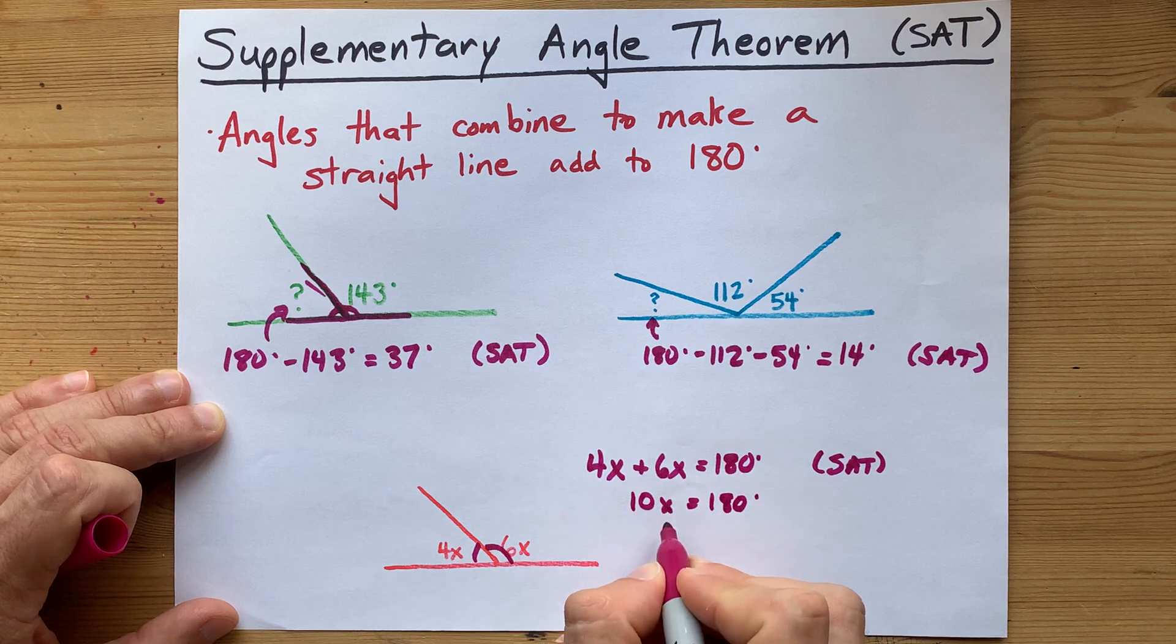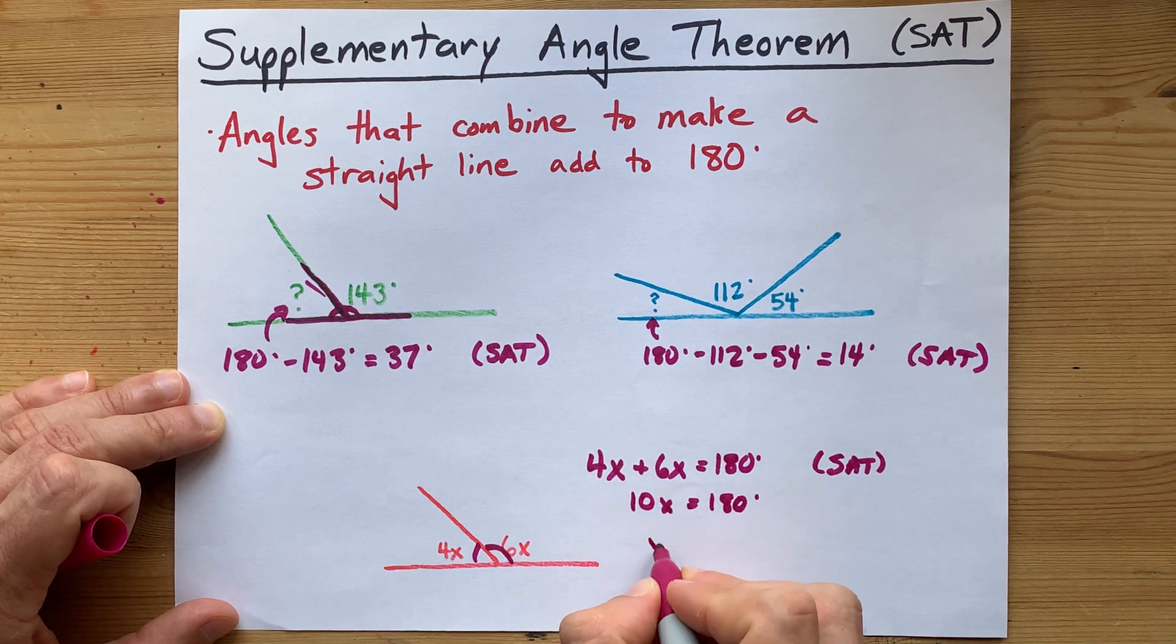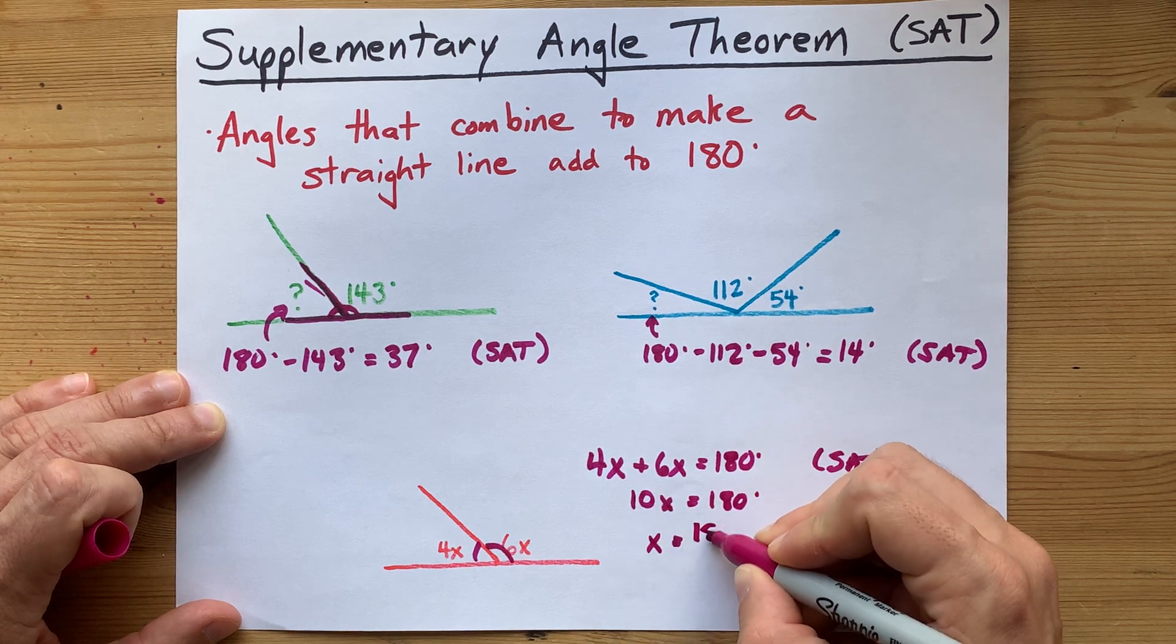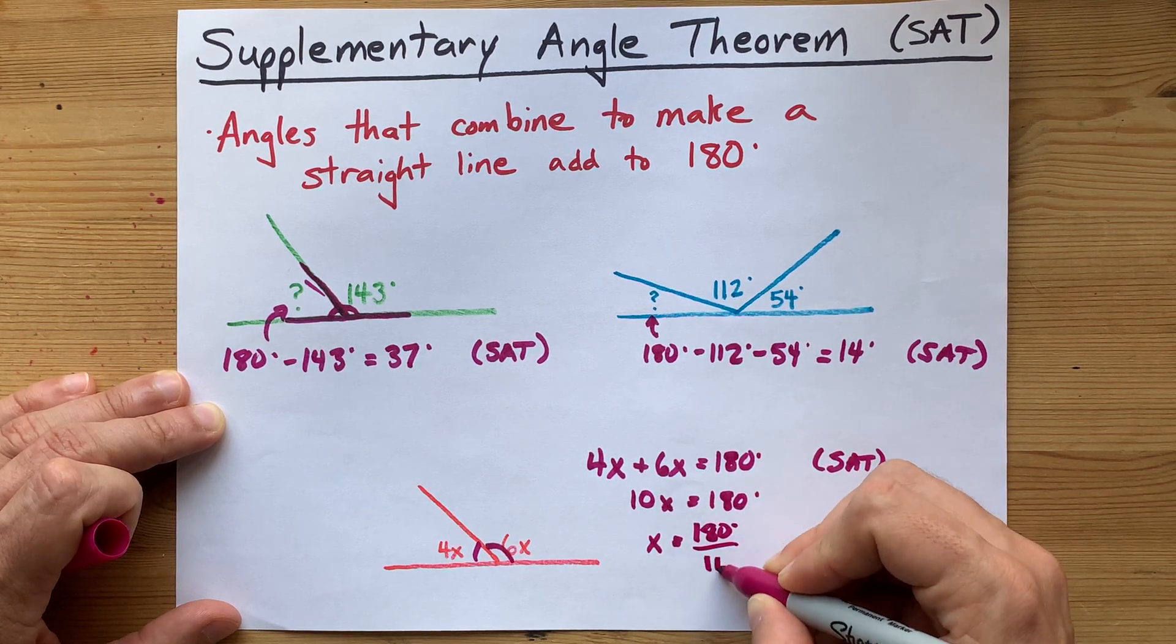And then 10 times something is 180. If you don't know what that is, don't worry, you can undo this multiplication by 10 by dividing the other side by 10.